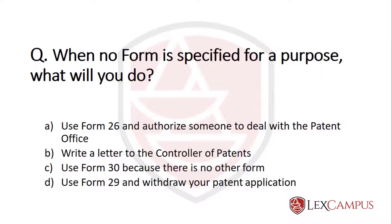Question. When no form is specified for a purpose, what will you do? A. Use Form 26 and authorize someone to deal with the patent office. B. Write a letter to the controller of patents.